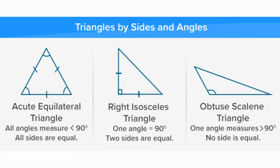Here are three examples. The left triangle we can call an acute equilateral triangle — it has all acute angles and all sides are equal. The middle triangle is a right isosceles triangle — it has one right angle and two sides of the same length. And on the right, we have an obtuse scalene triangle — it has an obtuse angle and none of the sides are congruent. We can use both sides words and angles words to describe a triangle together.